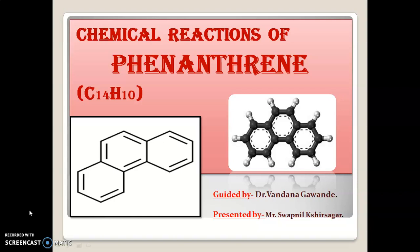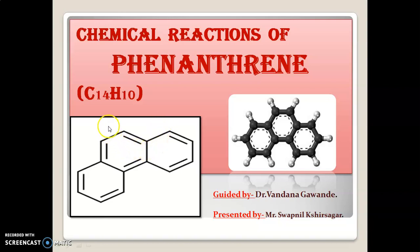Phenanthrene is one of the polynuclear aromatic hydrocarbons containing 14 carbons and 10 hydrogens, with chemical formula C14H10. It contains two intact benzene rings. It has the same chemical reactivity, or somewhat different, as that of anthracene and naphthalene which we have studied before. It is a reactive compound which has many chemical reactions. Let us study in detail about the chemical reactions of phenanthrene.